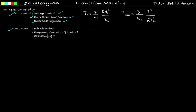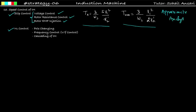In the previous lecture we have already gone through the torque-speed characteristics and the formula of electromagnetic torque under running condition. The formula of maximum torque is given as 3/(ωs) × V1²/(2X2') and electromagnetic torque under running condition is given as 3/(ωs) × sV1²/R2'. These two were found under approximate analysis.